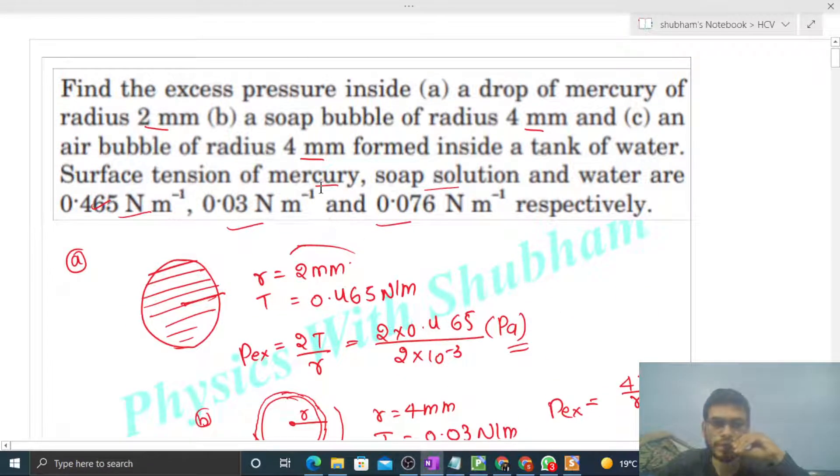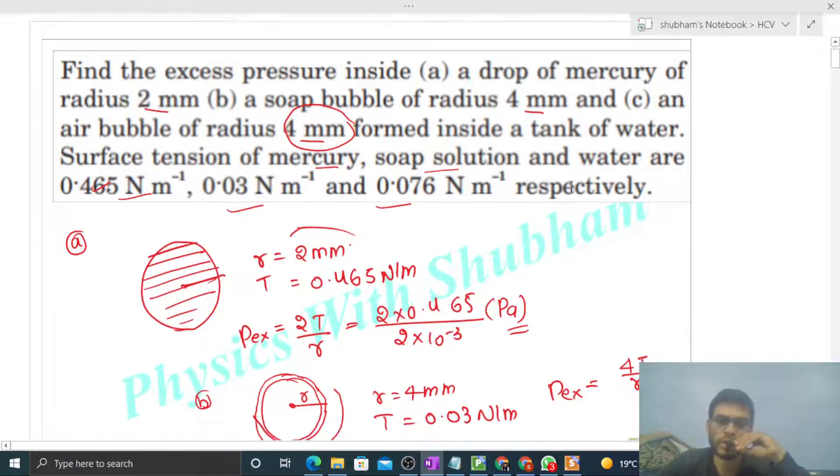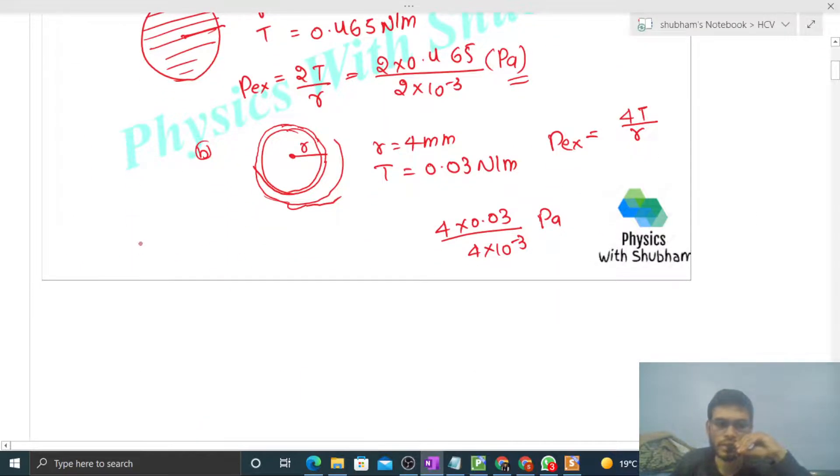Let's check option C: an air bubble of radius 4 mm formed inside a tank of water. Okay, so you see, like this we have a water tank, and inside this, we have an air bubble. Means inside this air bubble there is air, and outside there is water.